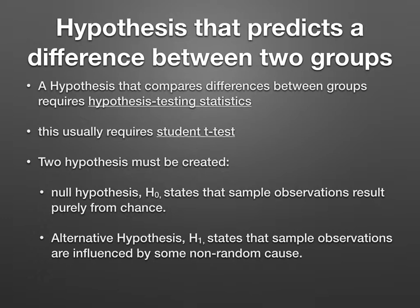You have to have a null hypothesis and an alternative hypothesis. The null hypothesis usually states there's no difference between the groups — in statistics terminology, it states that the sample observations result purely from chance. For example, with planaria given drug one and drug two and a control, the null hypothesis would say that drug one given to the planaria would have no difference in regeneration rate compared to when drug two was given. There was no difference between the drugs in the regeneration of planaria.